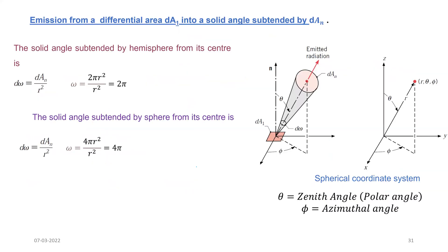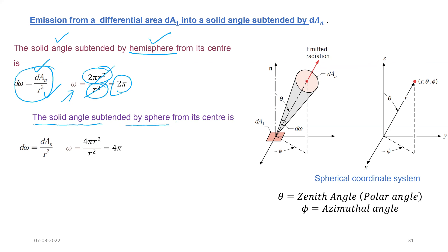Now I have calculated the solid angle for a hemisphere. Since dΩ equals dAn divided by r², for a hemisphere the surface area is 2πr². Dividing by r², the solid angle for the hemisphere equals 2π. Similarly, the solid angle subtended by a sphere from its center uses surface area 4πr² divided by r², giving a solid angle for the sphere of 4π steradians.